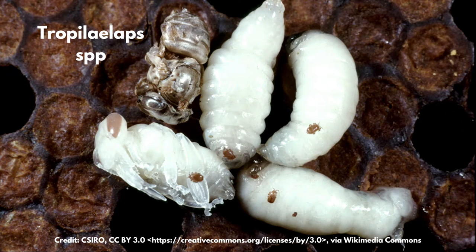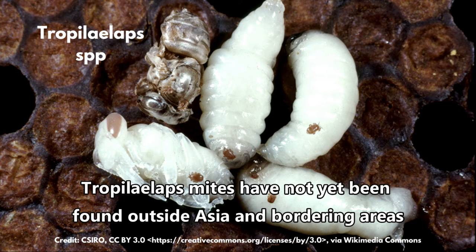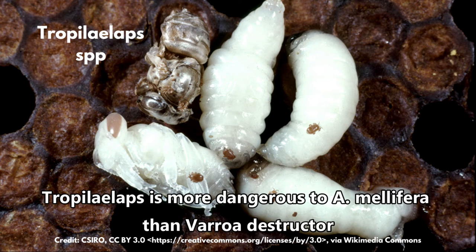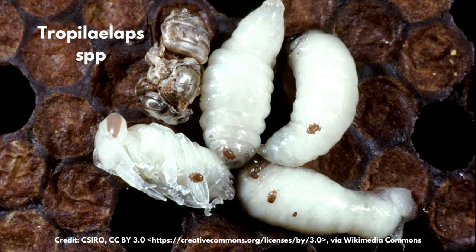Another pest is the Tropilaelaps species of mite. These mites are not in Europe but are always a potential threat; their primary hosts are the large Asian honeybee, Apis dorsata. You need to check whether these mites are present in your country. In Ireland, if you come across these mites it is a notifiable disease — you must notify the agricultural authorities that you suspect you've found them.